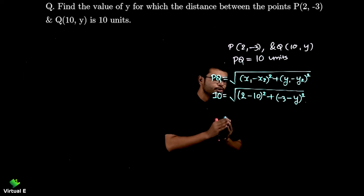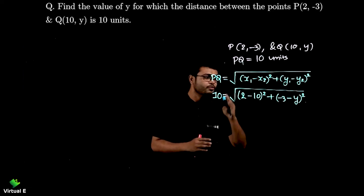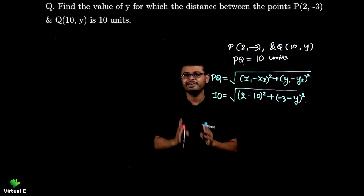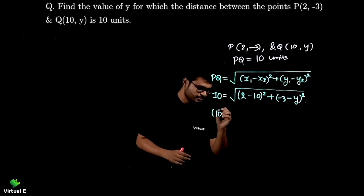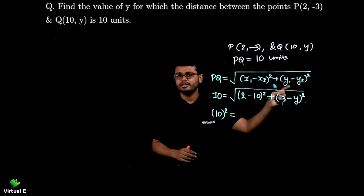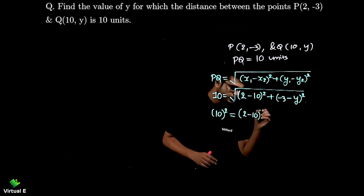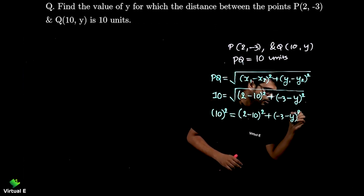Okay, so I told you that whenever we have this kind of situation first of all you need to do square on both of the sides. So this square root will be removed and we can simplify in very easier way. So when we do square this will become 10² and this square root will be removed. So what's left is (2 - 10)² plus (-3 - y)².